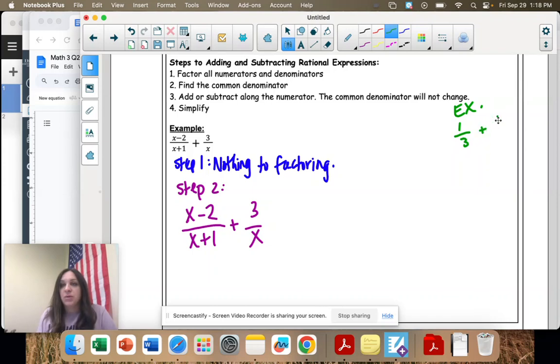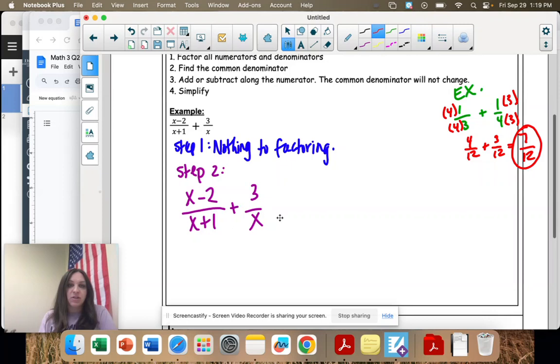If I were taking 1/3 plus 1/4, my common denominator would be 12. I multiply them by each other. What you do on the bottom, you have to do on the top. So for this example, it would be 4/12 plus 3/12. When you add, only the top changes, and now you have 7/12. That's just a random example with numbers. Let's go back to this.